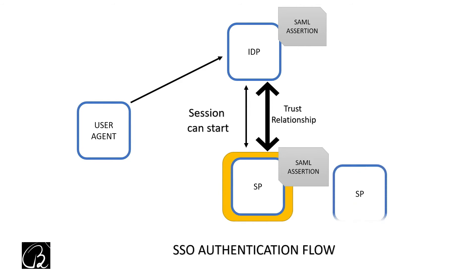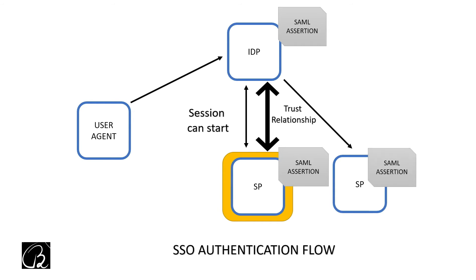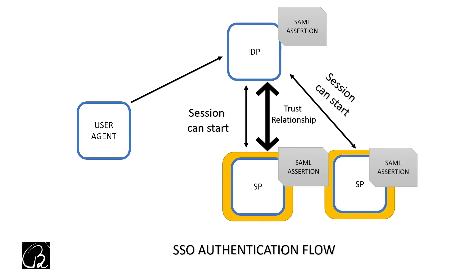If the user wants to access one more service provider, since they are already authenticated in IDP, IDP will provide the SAML assertion to that service provider as well. Because of the trust relationship between SP and IDP, SP again understands that you are an authenticated user for IDP — hence for the SP as well — and the session can start. You only have to provide credentials once to IDP, but the trust relationship between IDP and each SP must be established while configuring SAML federation or SSO.